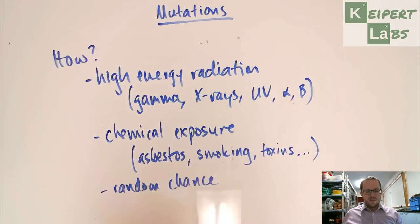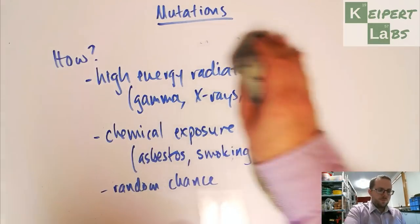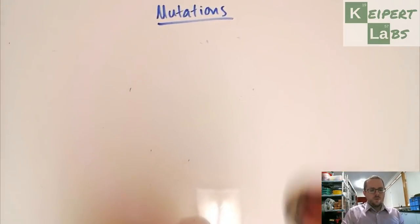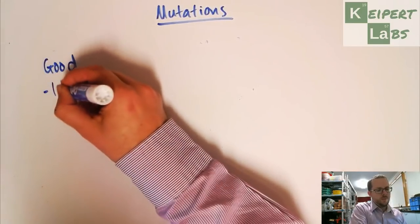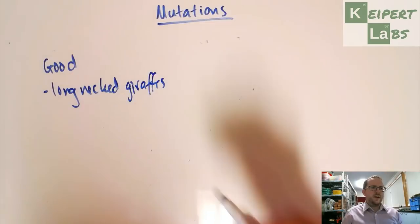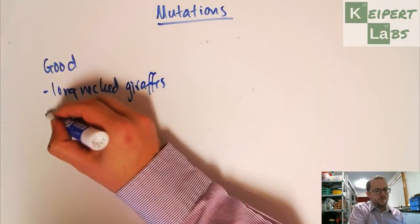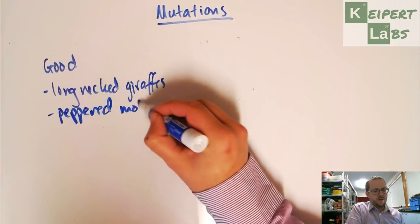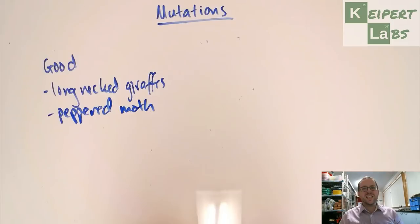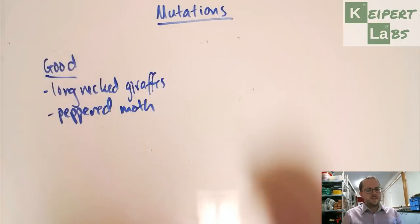And so sometimes these mutations are a good thing. So they could be good. So like we thought about our long-necked giraffes. Or it could be, if you've heard of the example of the peppered moth, where a random mutation in the colour of a moth allowed it to be better camouflaged on the trees and less likely to be picked off by predators. So that can be good.